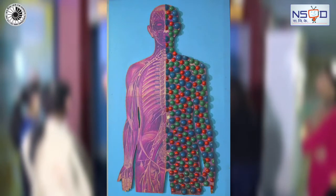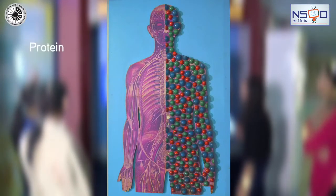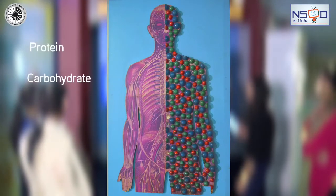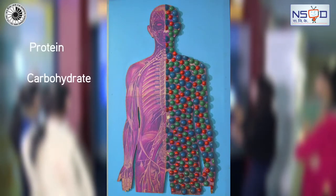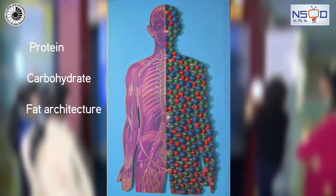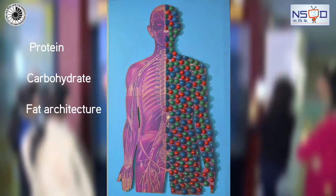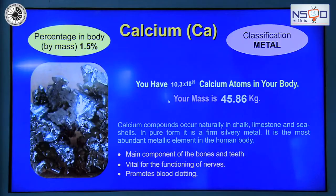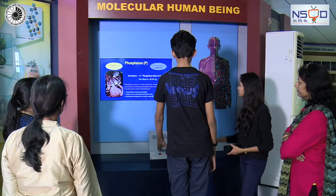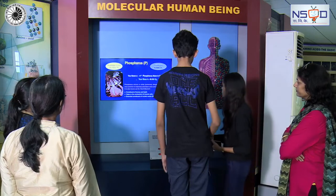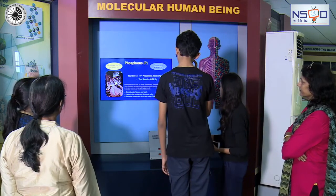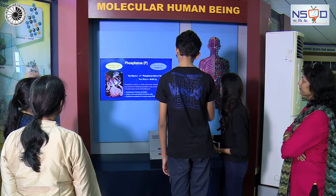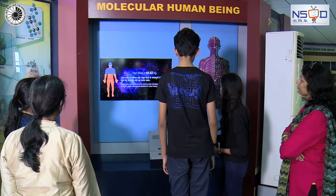These elements are essential parts of the body's protein, carbohydrate, and fat architecture. Other key elements — Calcium and Phosphorus — are the main components of bone and teeth.